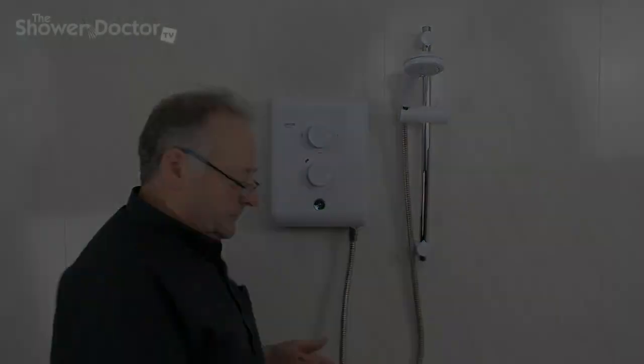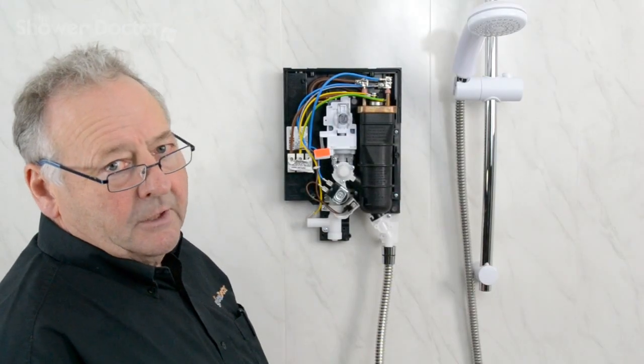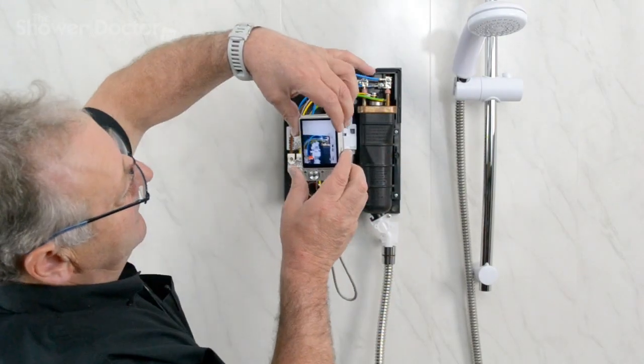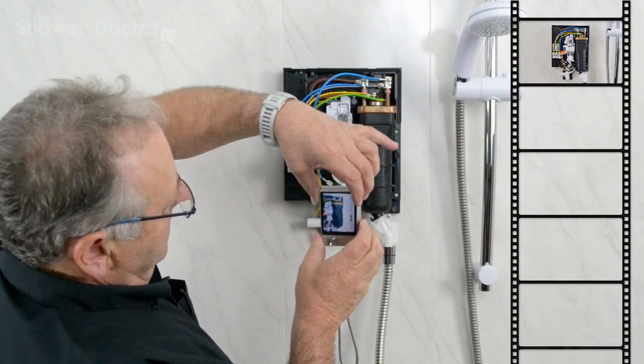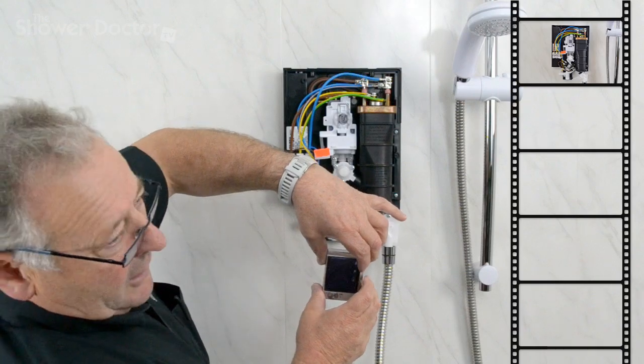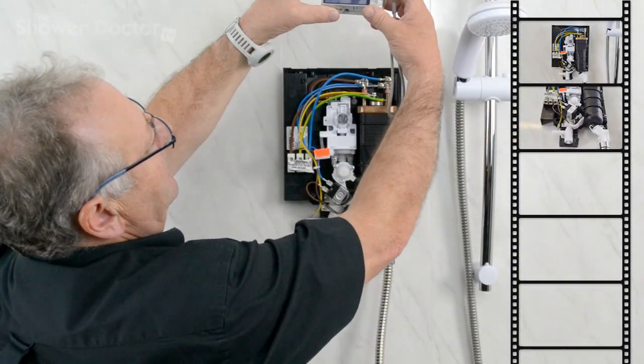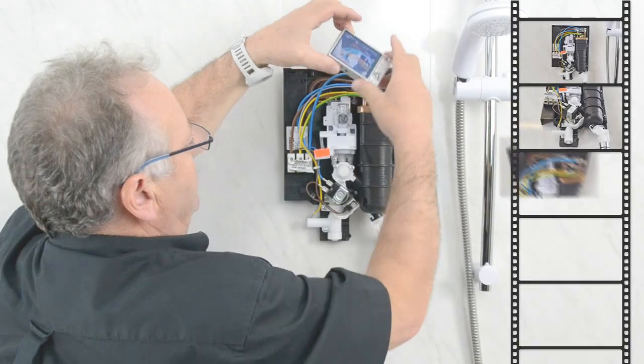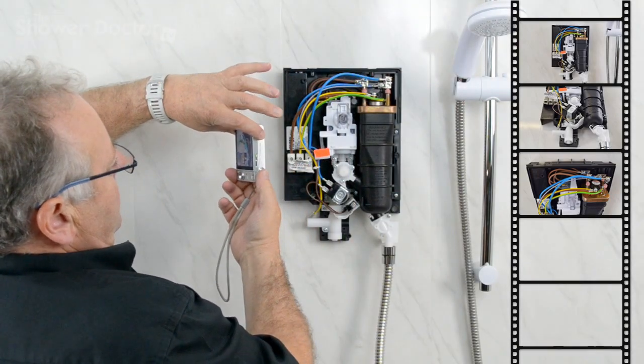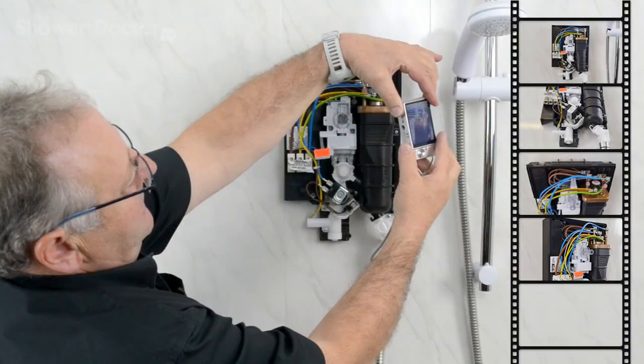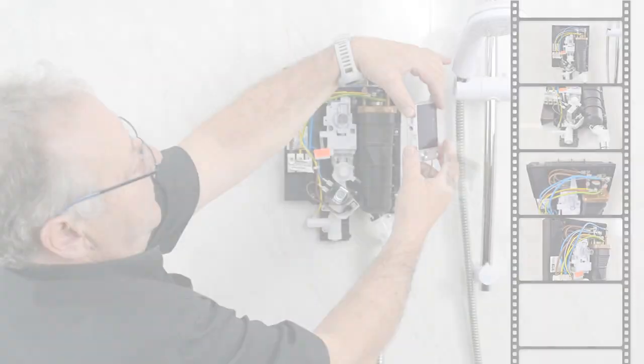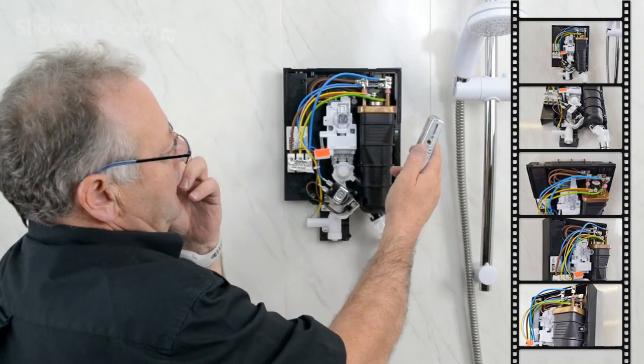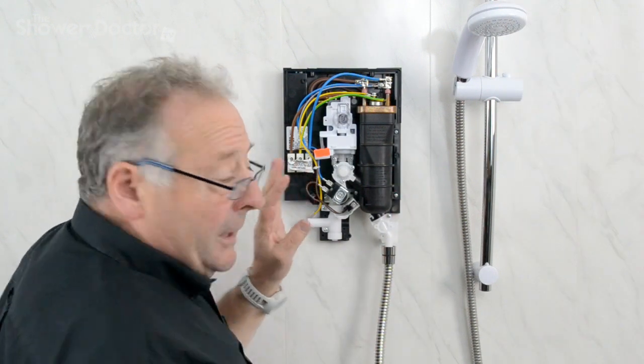So now we're ready to take some photographs before we start. Probably what we want is one face onto the shower and probably one looking up the way and looking down onto the wiring. This one's probably quite important to make sure we get that right, and then basically one from either side just in case we have a problem when putting the shower back together again. That's the photographs taken.